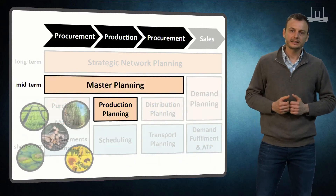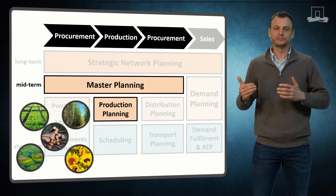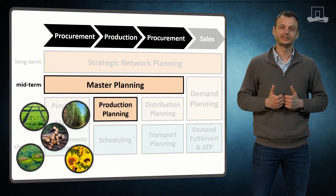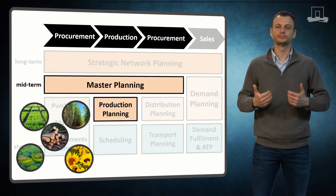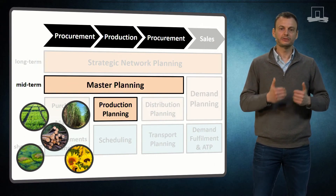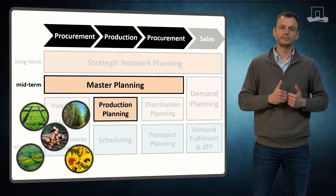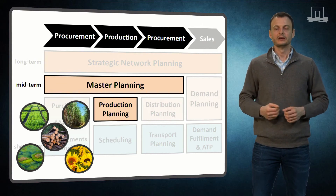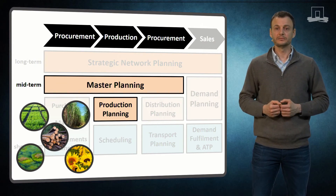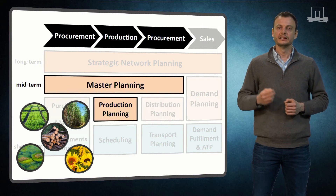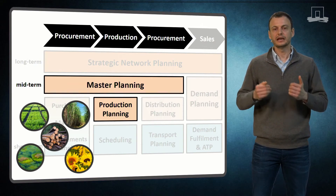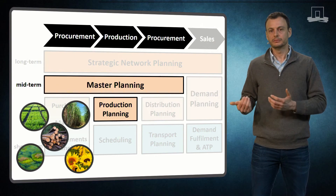Master planning as well as short term production planning provides directions for deciding upon procurement quantities. These decisions are part of the purchasing and material requirement planning. Such planning activities are very important in biomass supply chains since they are very much related to the availability and supply of biomass.